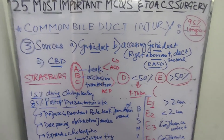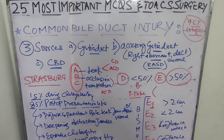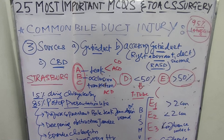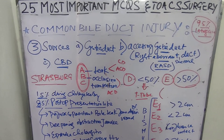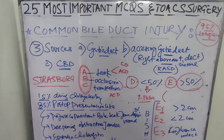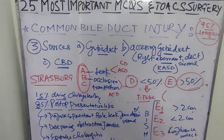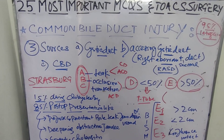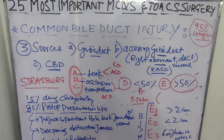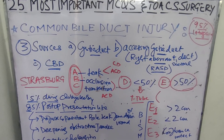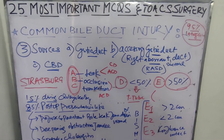To summarize the classification: A is leak; B is occlusion; C is transection of the accessory cystic duct; D is less than 50% injury of the common bile duct; E is more than 50% injury of the common bile duct.